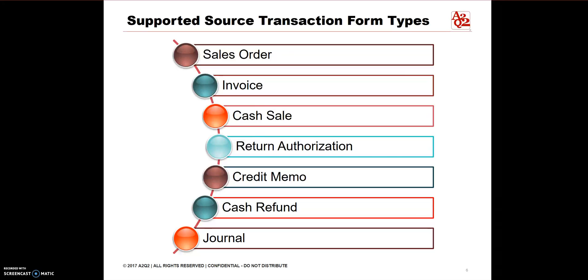The supported source transaction form types are Sales Order, Invoice, Cash Sale, Return Authorization, Credit Memo, Cash Refund, and Journal.